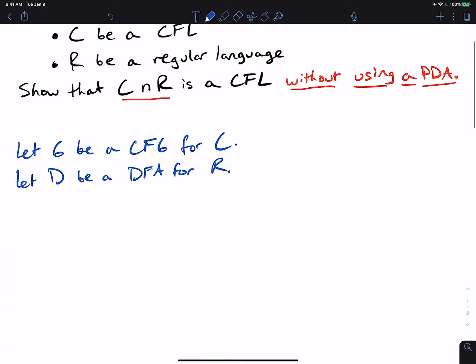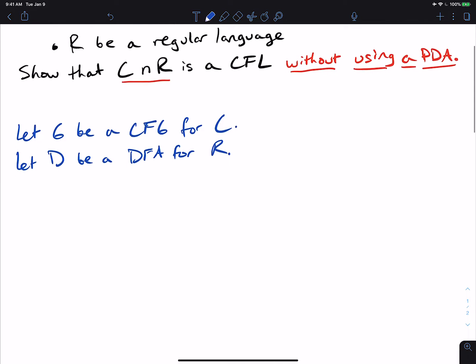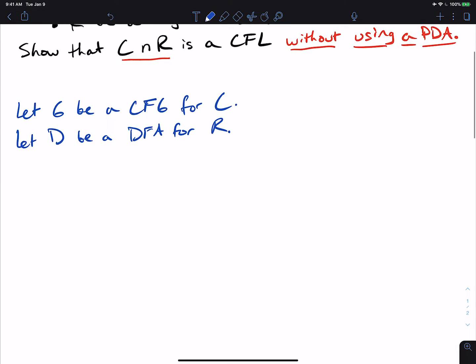And let's also let D be a DFA for the regular language R. Because it's a regular language, there must exist a DFA for it. So here, we're not only going to not make a PDA out of it, we started with a CFG, we're going to make a CFG.